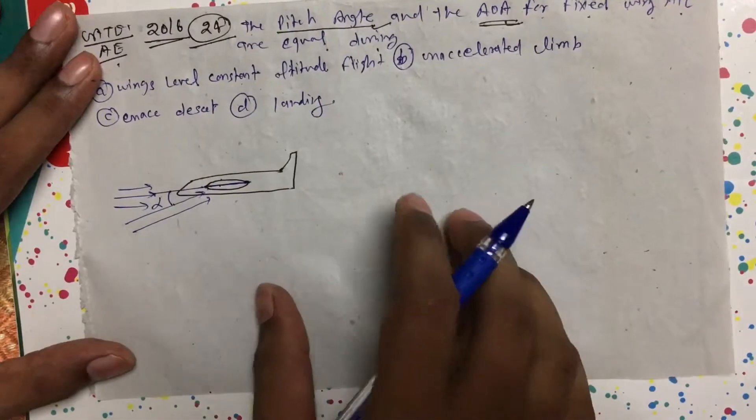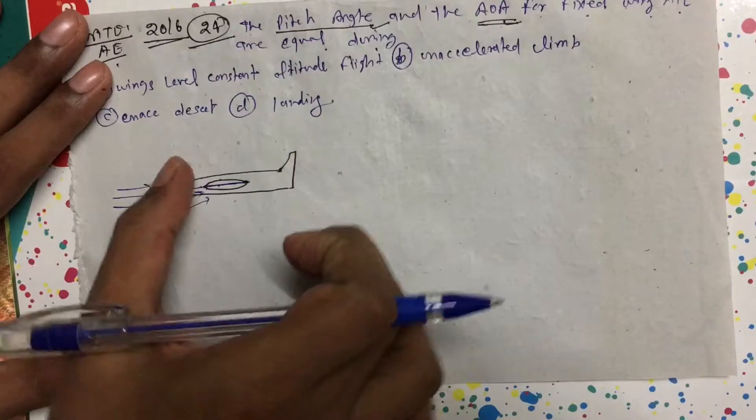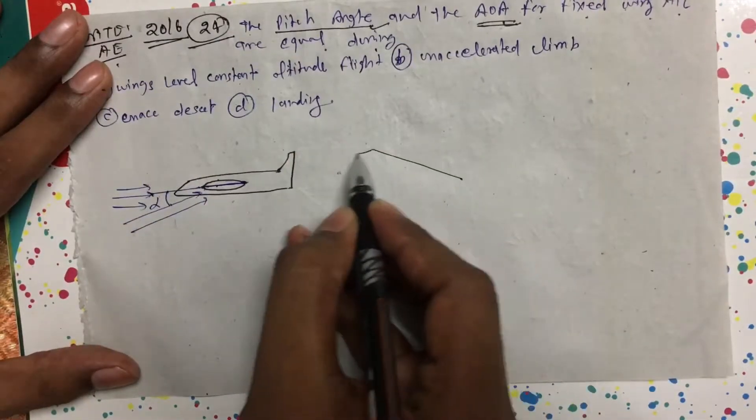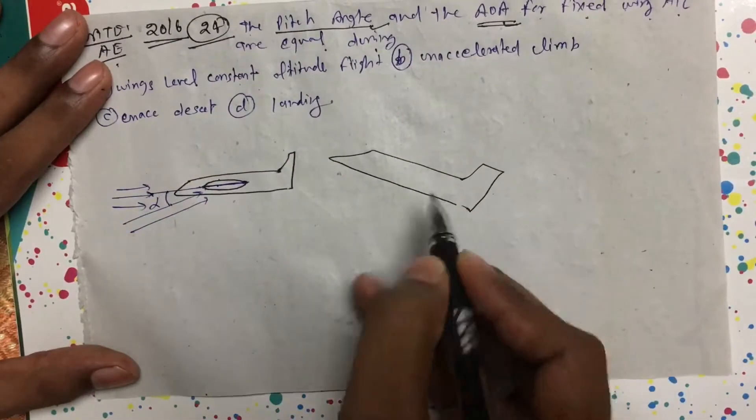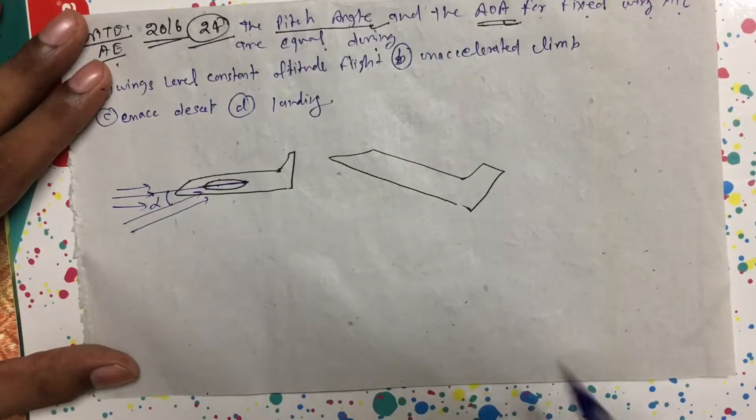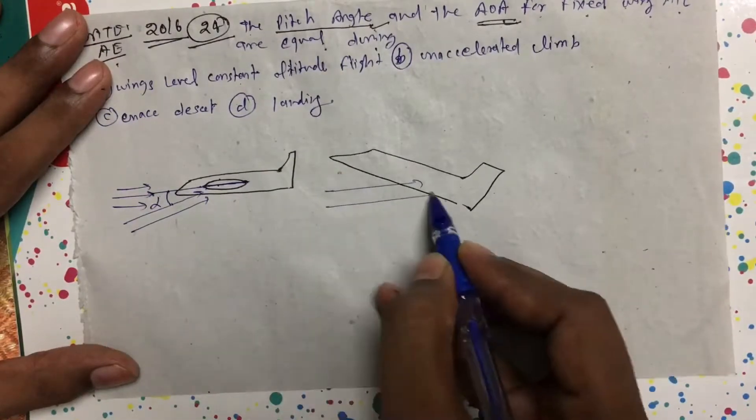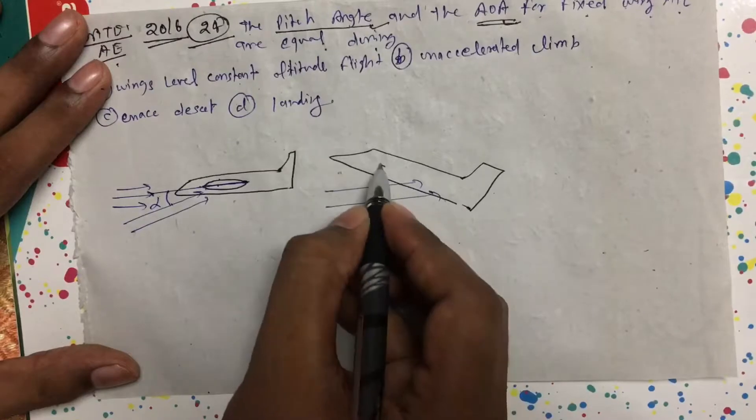And suppose your airplane is something like this, something like this, and air is coming like this, and suppose this is the chord line.